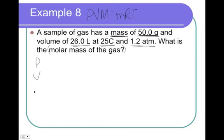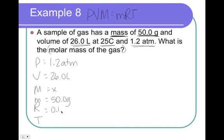P, V, M, m, R, T. The pressure was 1.2 atmospheres. The volume is 26.0 liters. The molar mass is X. The mass is 50.0 grams. R is the same as it always is, 0.0821. Temperature, 25 degrees Celsius is 298 Kelvin.